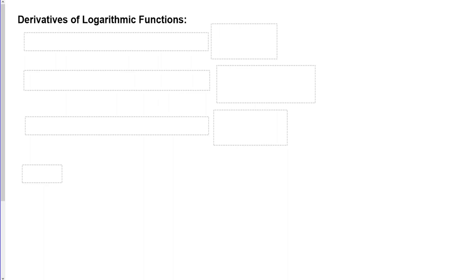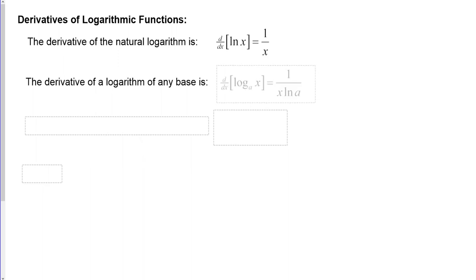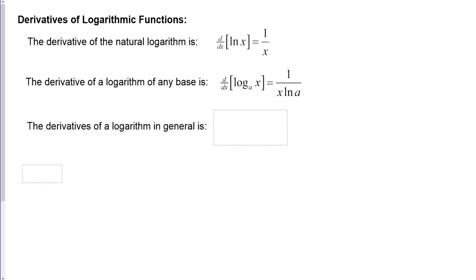Now let's look at derivatives of logarithms. The derivative of the natural logarithm ln x is just 1 over x — somewhat surprising since ln x is a transcendental function and 1 over x is a rational function. The derivative of log base a of x is 1 over x times the natural log of a. And the derivative of the natural log of u in general is u prime divided by u.